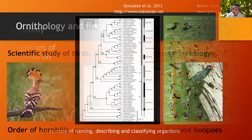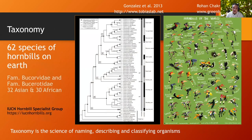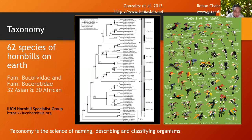It includes both the Bucorvidae — the ground hornbills, which are two species — and the rest are 60 species of Bucerotidae. One of my claims to fame is finishing what we call a complete phylogeny of Bucerotidae and Bucorvidae, which I published in 2013 as a result of my DPhil at Oxford. I went through a long process of learning molecular biology.